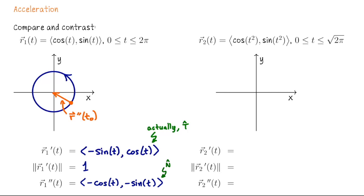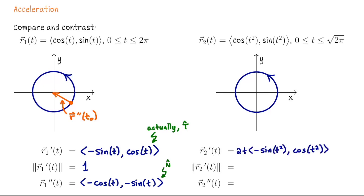But that is special for this parametrization. Let's look at a different description of the same curve. R2 of t is (cos(t²), sin(t²)) for t values going from 0 to √(2π). It traces out the same curve, but we get different results for the velocity, speed, and acceleration. Using the chain rule and factoring, the velocity vector is 2t times (−sin(t²), cos(t²)), which means the speed is 2t.